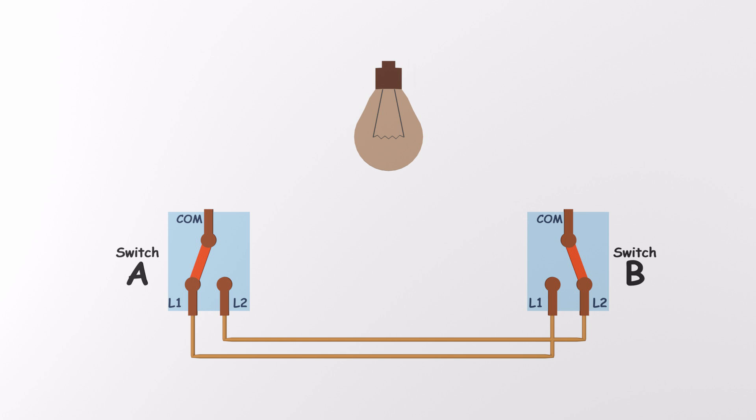Now, choose the switch that's closer to your power source. We'll call that one switch A. Connect the common terminal of switch A to the live wire, also called phase, or hot wire.